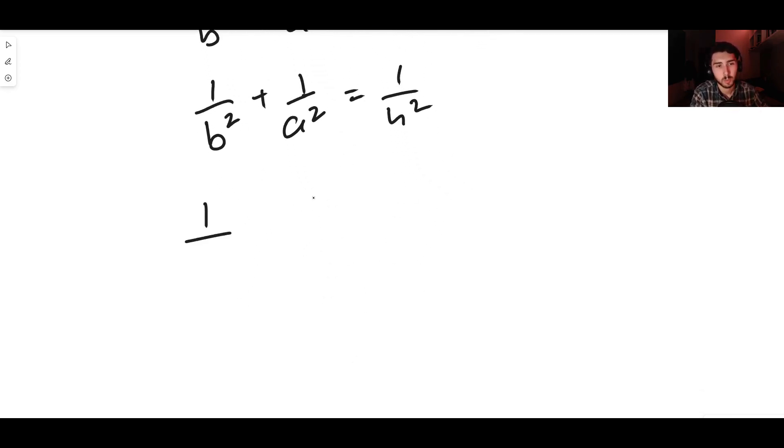And of course, just to make it look a little bit nicer, I'm going to rewrite these terms the other way around: one over a squared plus one over b squared equals one over h squared.